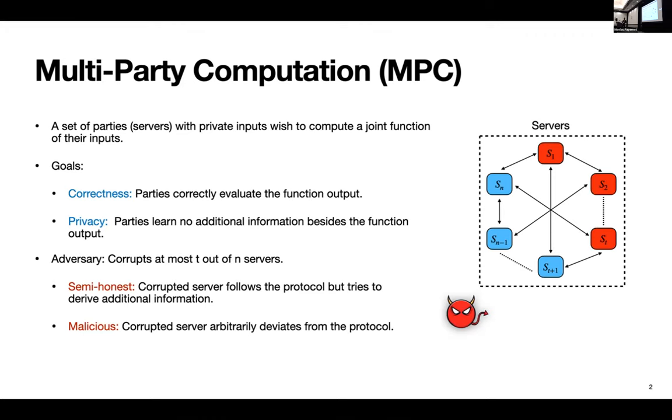So this occurs in the presence of an adversary who is allowed to corrupt utmost T out of N servers in the MPC. And these corrupted servers can behave one of two ways. One is the semi-honest corruption where the corrupted servers follow the protocol as designed, but they try to derive some additional information from the protocol. And second is the malicious behavior where they can arbitrarily deviate from the protocol.